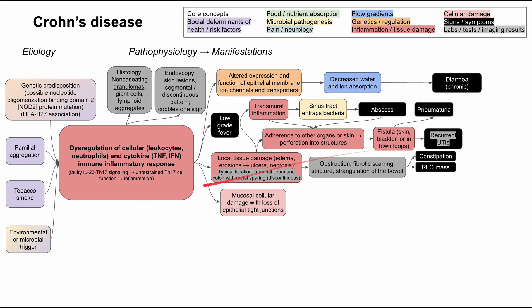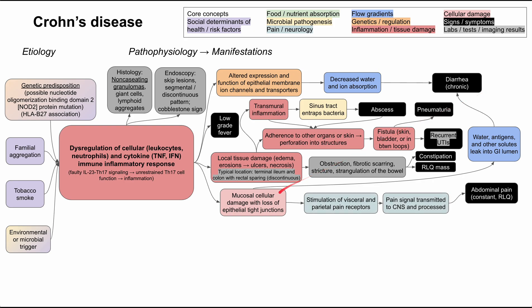The inflammation of Crohn's disease causes mucosal cellular damage with loss of epithelial tight junctions. When these tight junctions are lost, the body cannot retain water and solutes — they leak into the GI lumen along with antigens, further exacerbating diarrhea. Additionally, when this cellular damage occurs, the patient will have stimulation of visceral and parietal pain receptors in the gut, transmitting pain to the central nervous system.